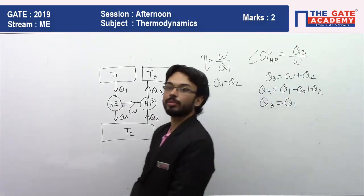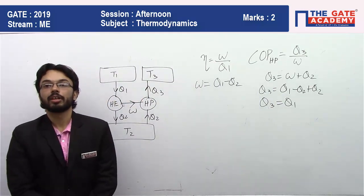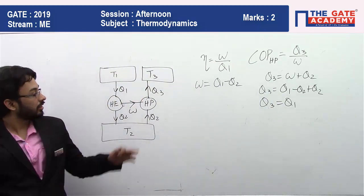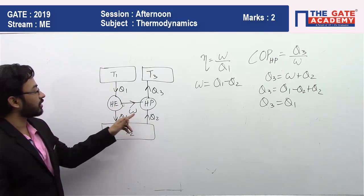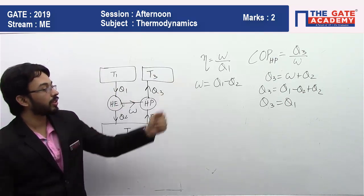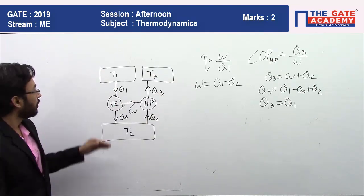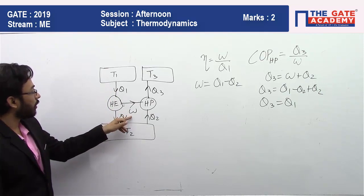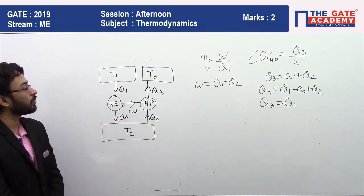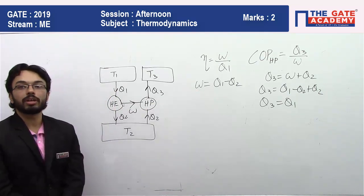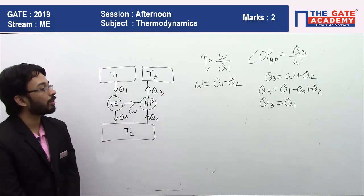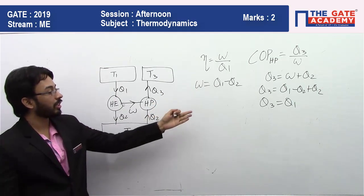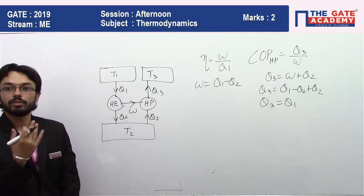We can say that Q3 is the addition of work and Q2. And here we can write work is equal to Q1 minus Q2. From these two relations we can write Q3 is equal to Q1.